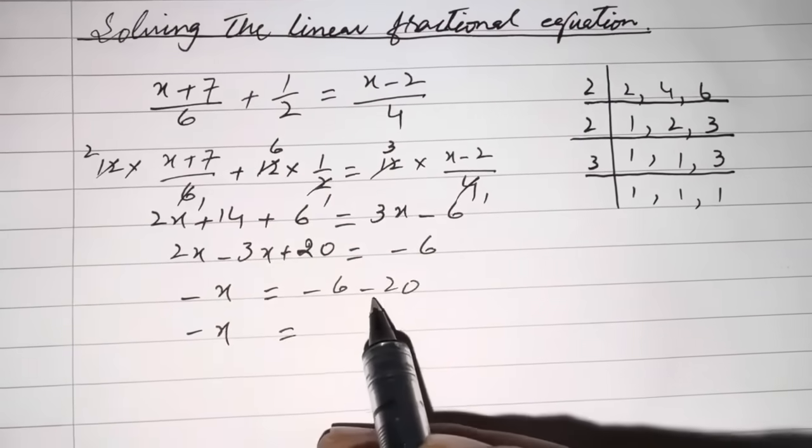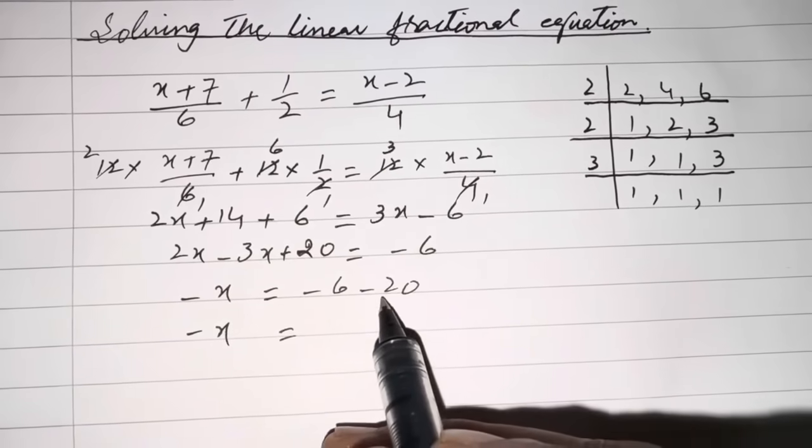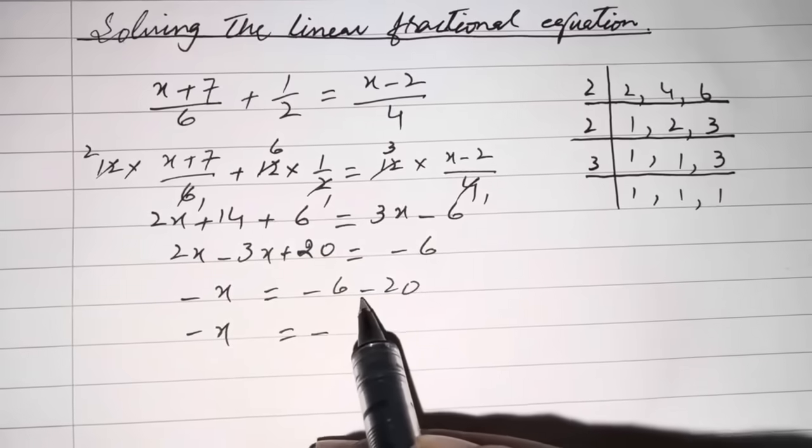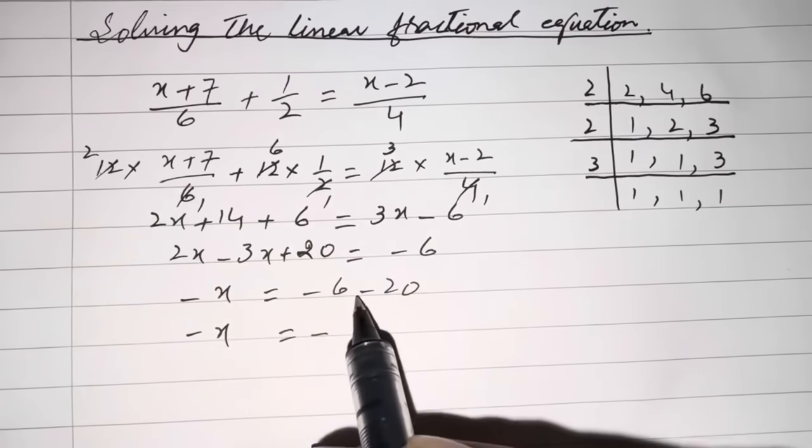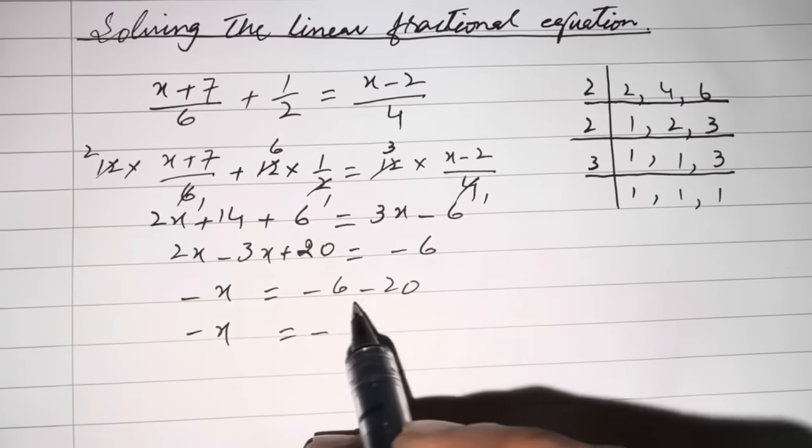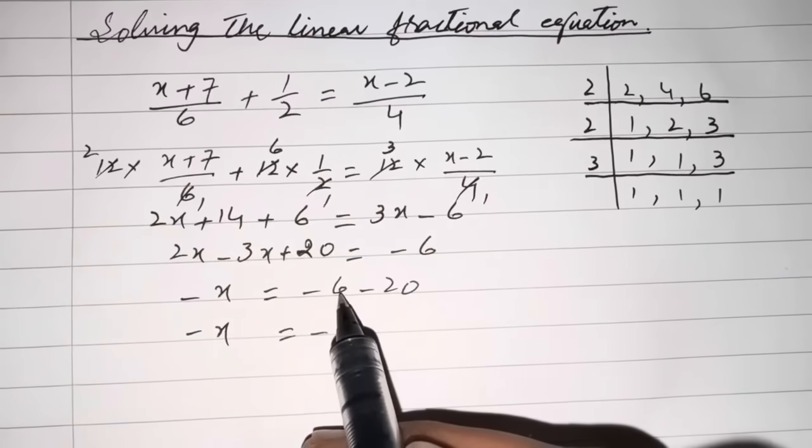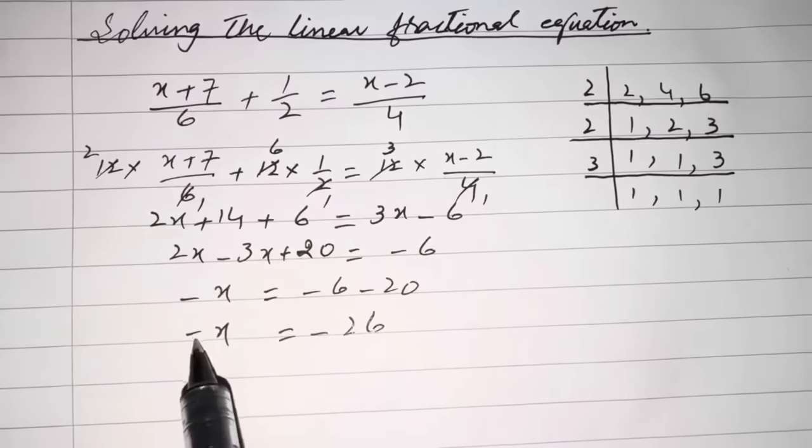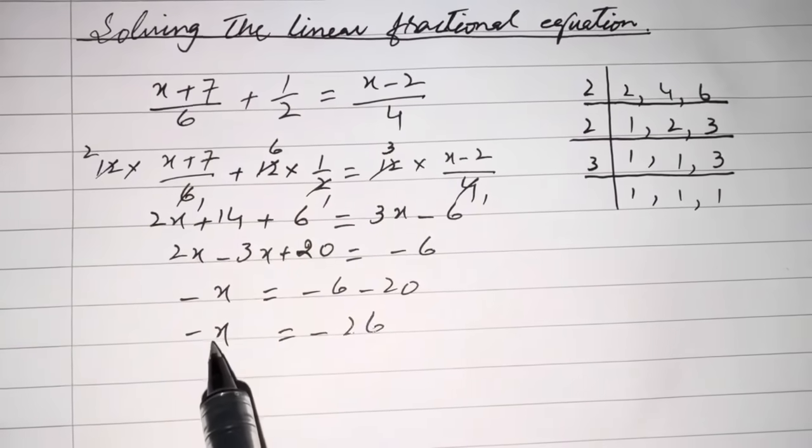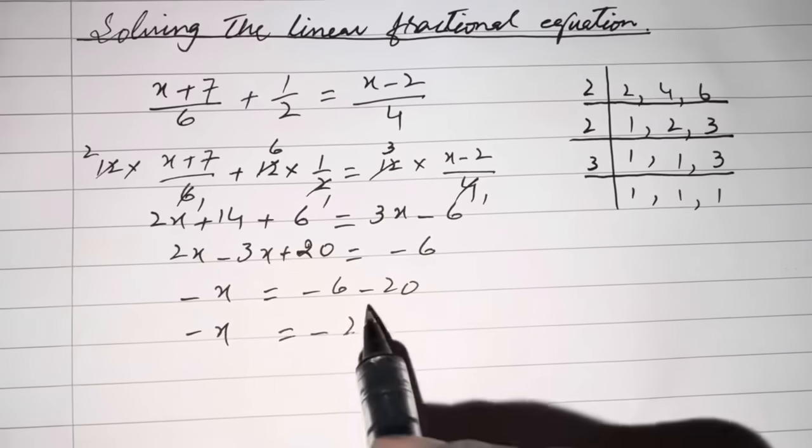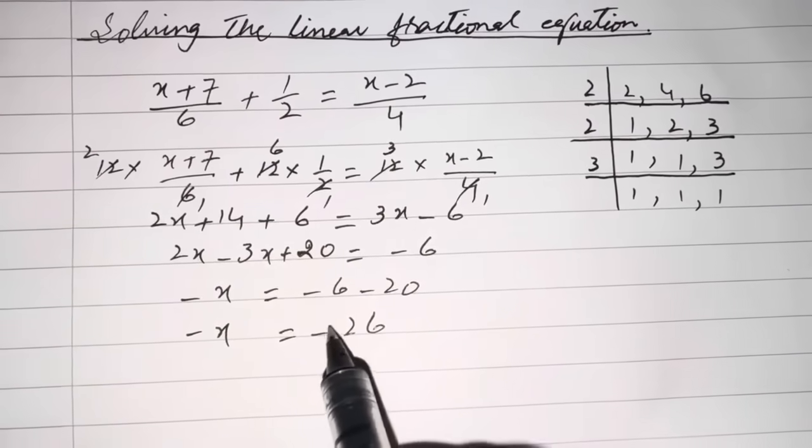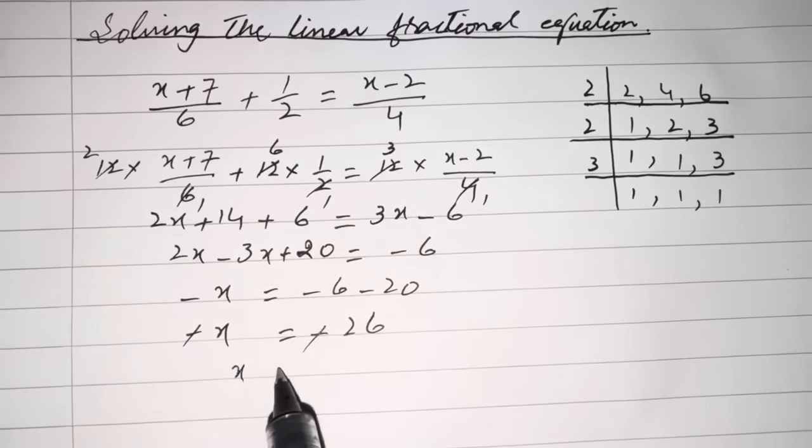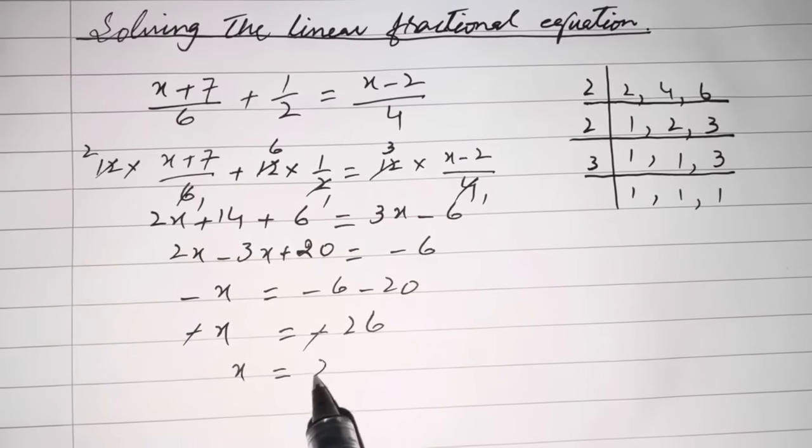Minus 6 and minus 20 will be added with each other, but the sign will be minus. Remember, same signs are always added with each other. That becomes minus 26. Both sides have a negative sign, so they cancel with each other. The value of x is 26.